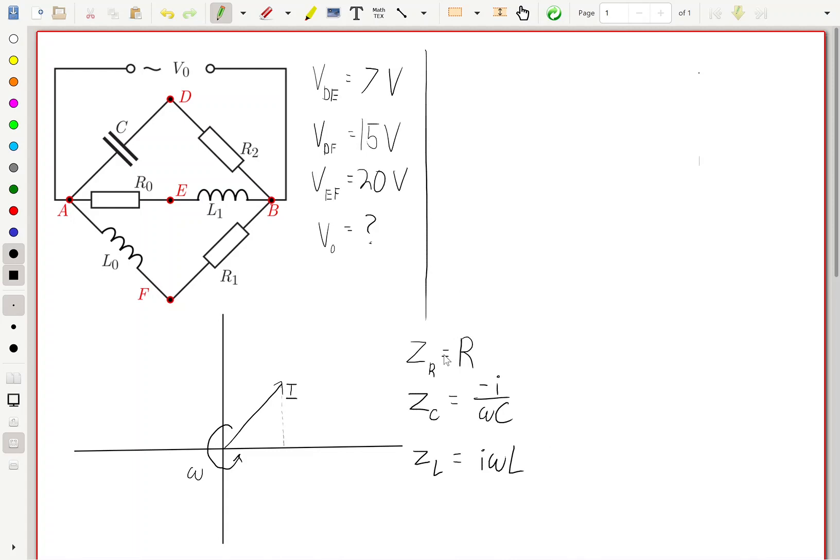Now these complex impedances basically allow us to get the potential difference between two points simply by multiplying the current and the impedance just like we would do in a normal resistor circuit. However, there is a caveat here, and it's that we have these complex numbers. What they basically do is they rotate the complex phasor I by 90 degrees or negative 90 degrees and then scale it up by either 1 over omega C or omega L.